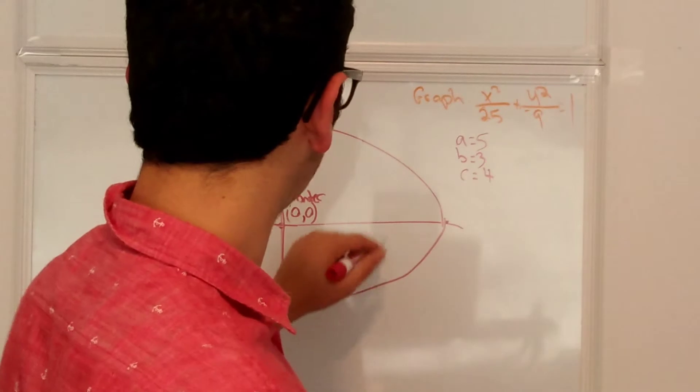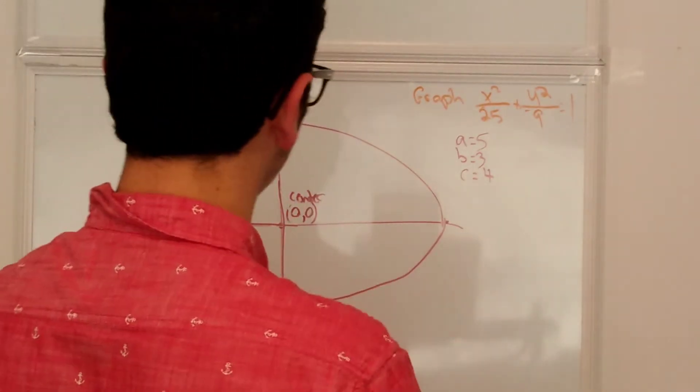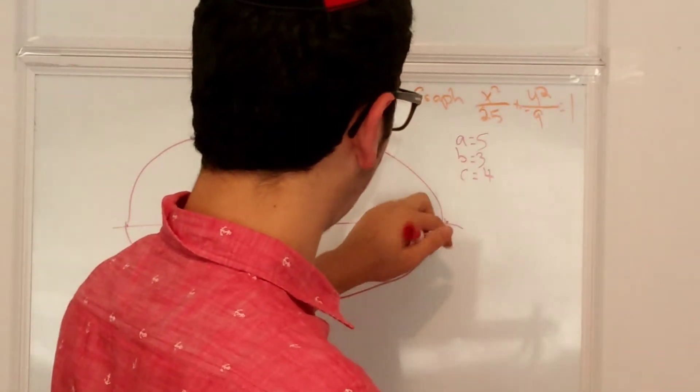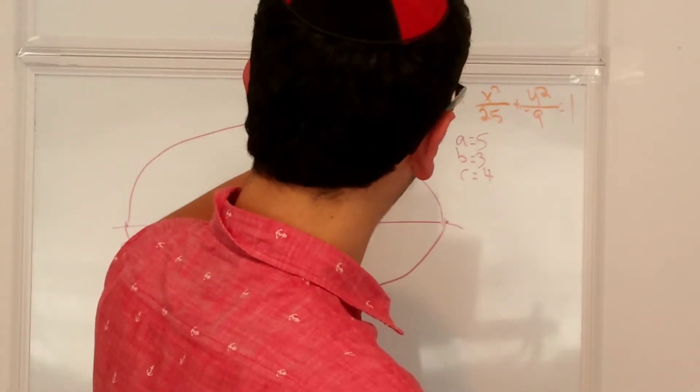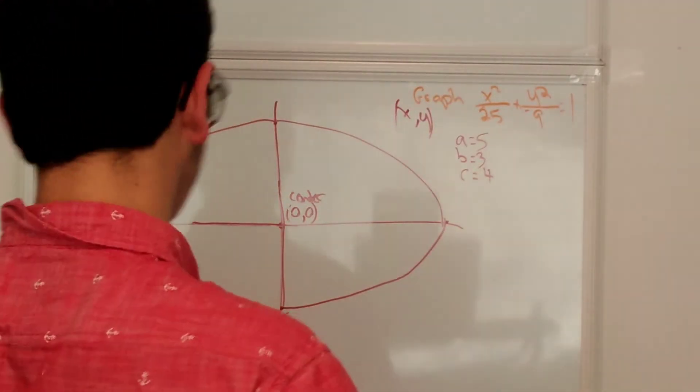And now since we know that c is equal to 4, we know that the foci is at... Oh, well first I should really label these points. It goes x, y, just in case you didn't know. That's the standard x, y coordinate system.